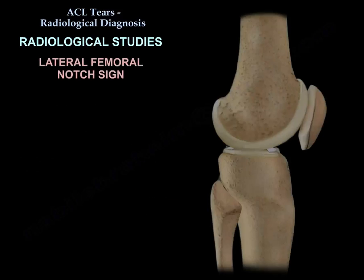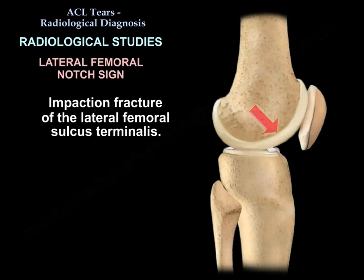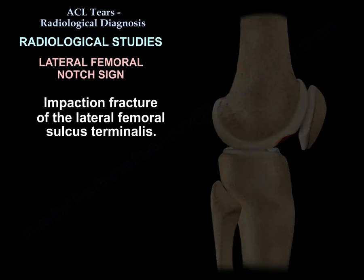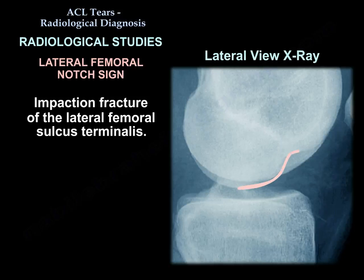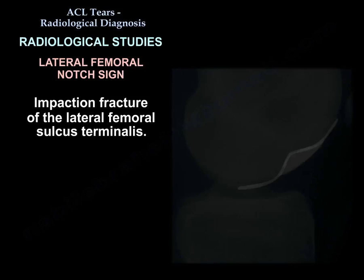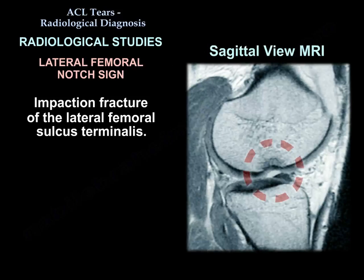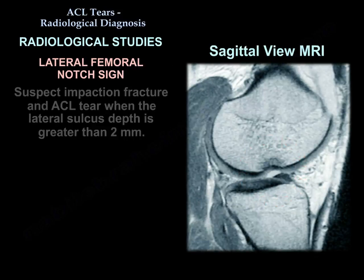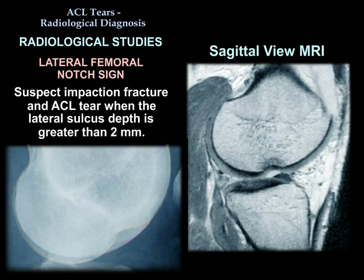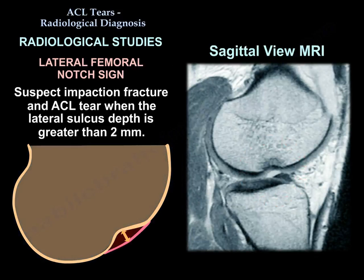The lateral femoral notch sign is an impaction fracture of the lateral femoral sulcus terminalis. It can be seen on the lateral x-ray or on the sagittal MRI. Suspect impaction fracture and ACL tear when the lateral sulcus depth is greater than 2 mm.